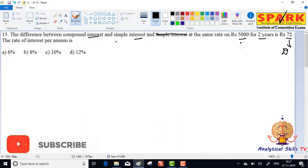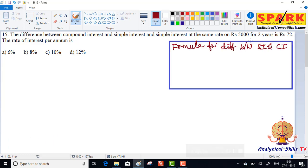For two years, identity sum or principal. Okay, in that manner check the formula. Okay friends, we have the formula for difference between simple interest and compound interest.